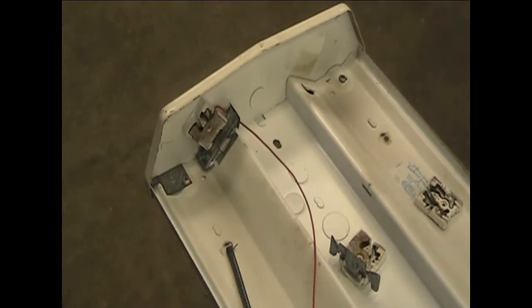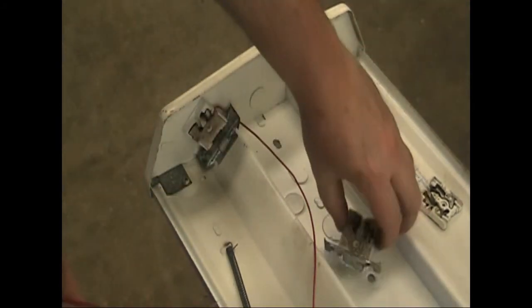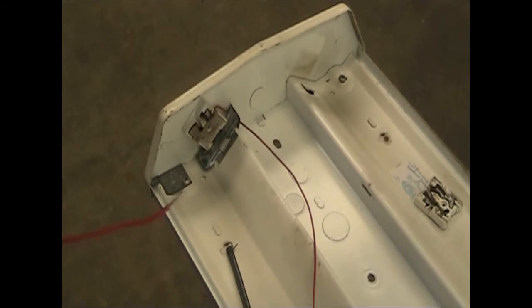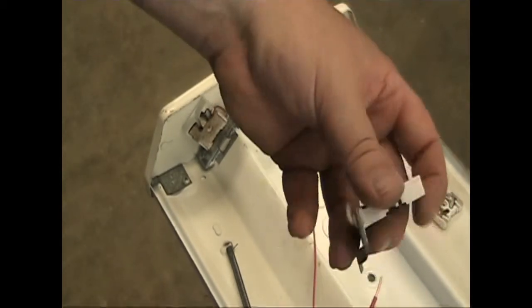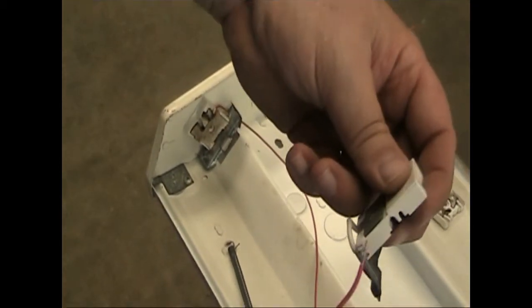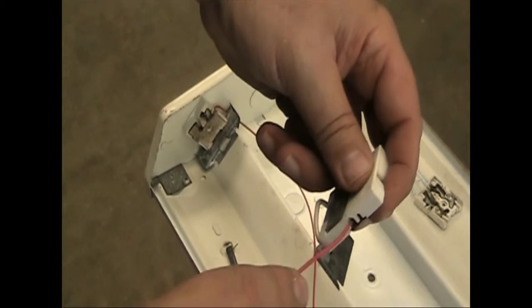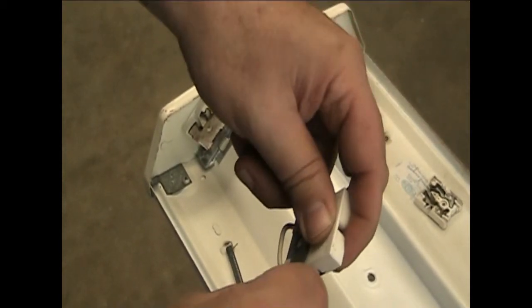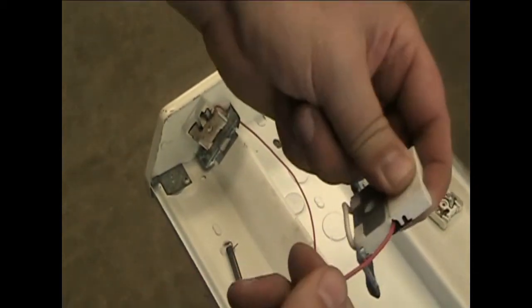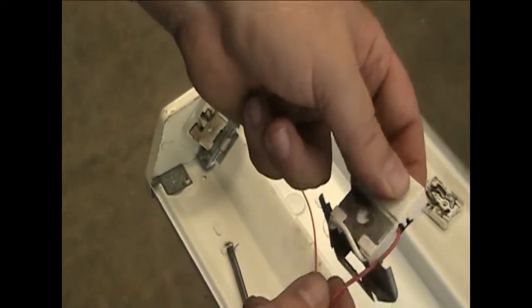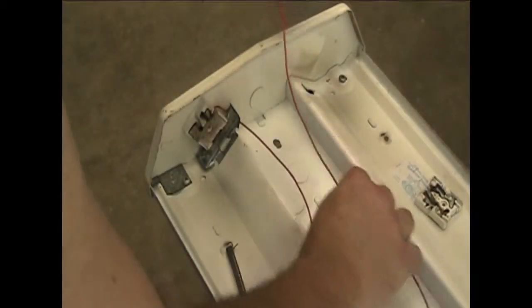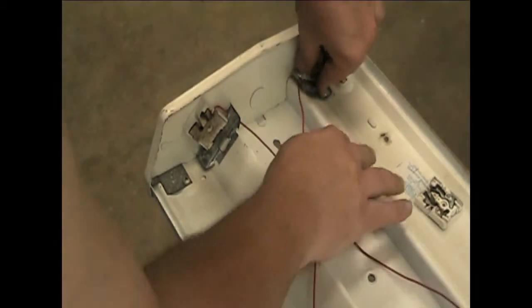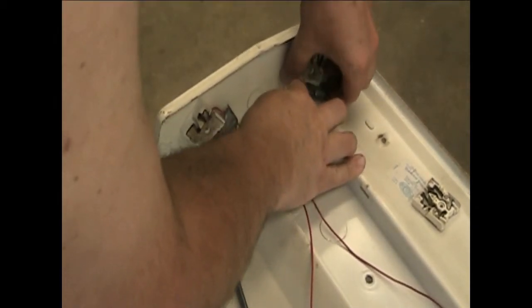This wire goes right through this hole. There we go. Pull it around this little loop, pull it forward so you can lay the wire in the trough and slip it in.